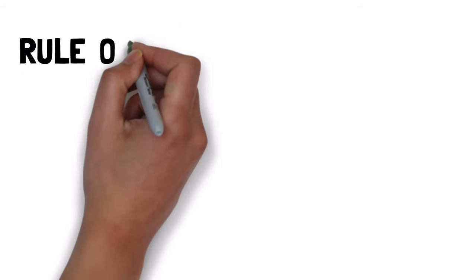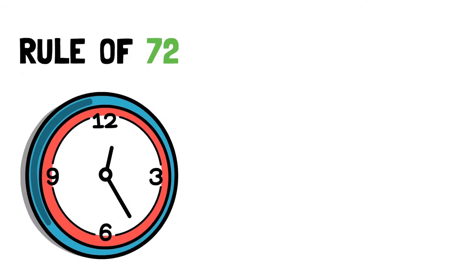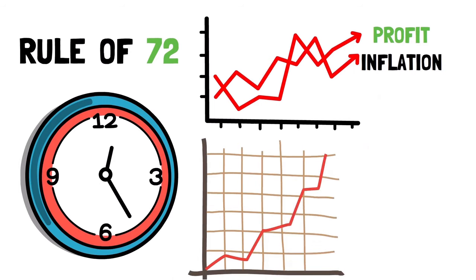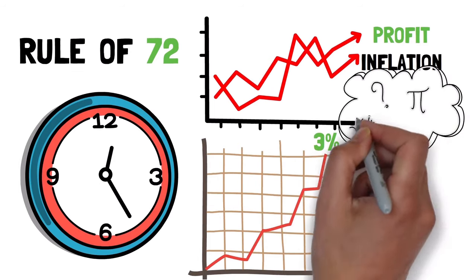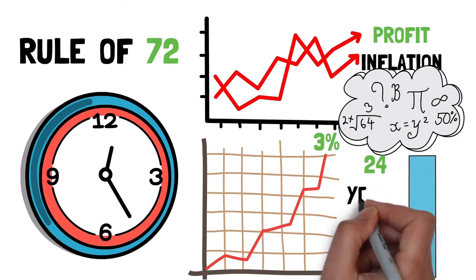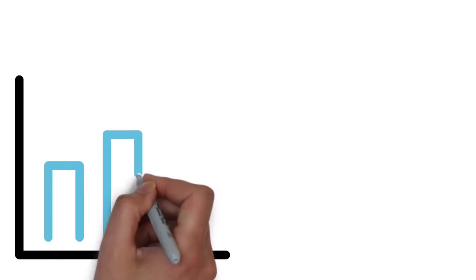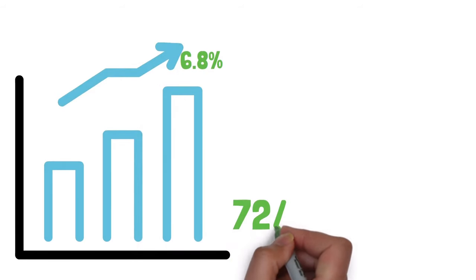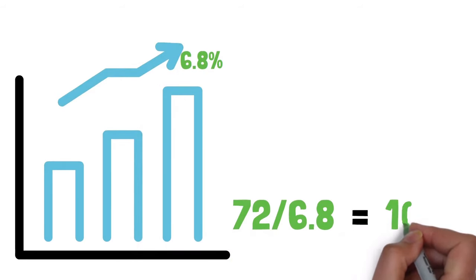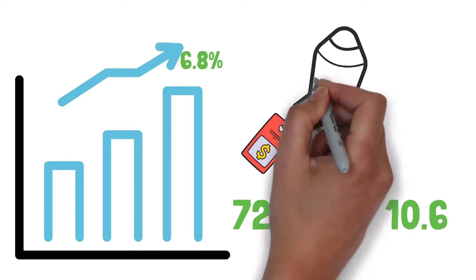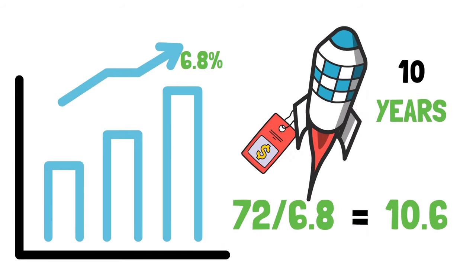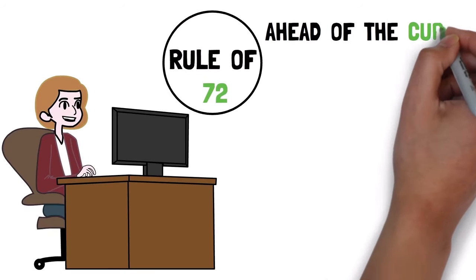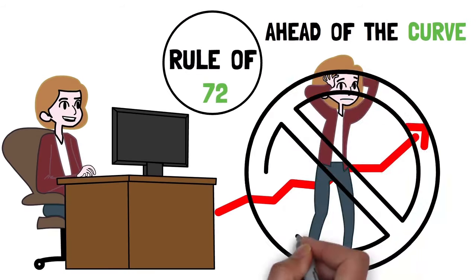The rule of 72 helps us determine how long it will take us to beat inflation. If, for example, inflation averages to 3% year after year, by doing the math, we realize that the price will double in the next 24 years. However, if the inflation rate stays at the current 6.8%, 72 over 6.8 gives us 10.6. As a result, prices will skyrocket in just 10 years. Using the rule, you may prepare ahead of time to remain ahead of the curve and avoid being knocked down by inflation.